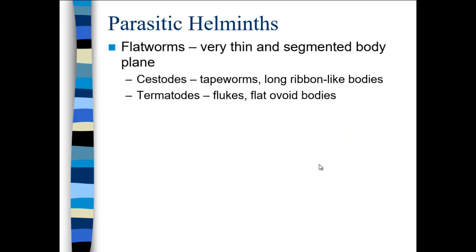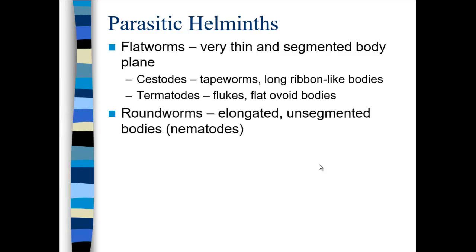Nobody likes worms, so let's talk about worms. There are two types. The first is flatworms, which have a segmented body plan. Cestodes are long, thin ribbon-like worms such as tapeworms. Trematodes include flukes, which have flat ovoid bodies. In contrast, roundworms are elongated with unsegmented bodies — these are nematodes. Nematodes are associated with plants, particularly leguminous plants like beans, but there are also infective roundworms.